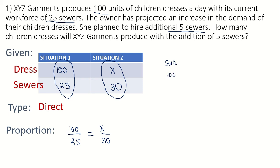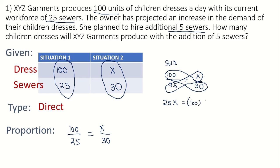So 100 over 25 is equal to X over 30. To solve for X, we apply cross multiplication: 25 times X gives 25X, and 100 times 30 gives 3,000. So 25X equals 3,000. Dividing both sides by 25, X equals 120.